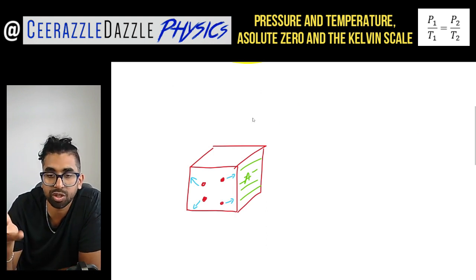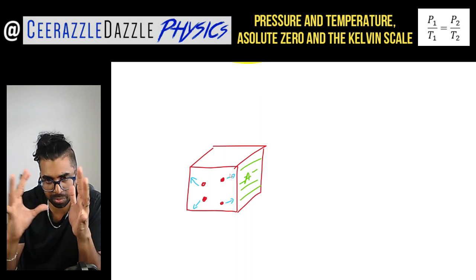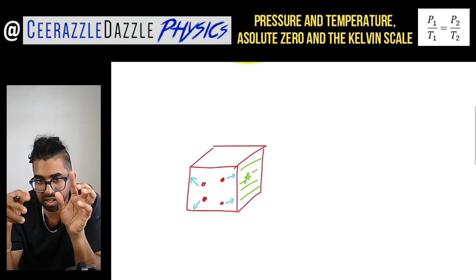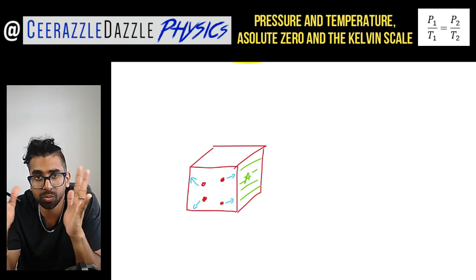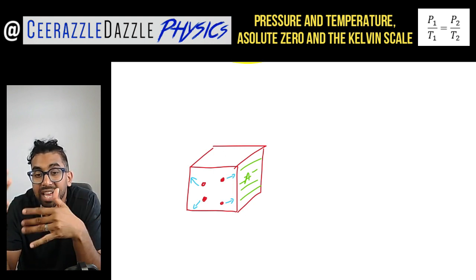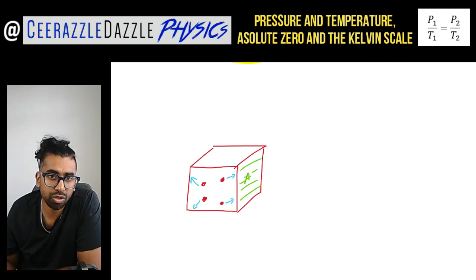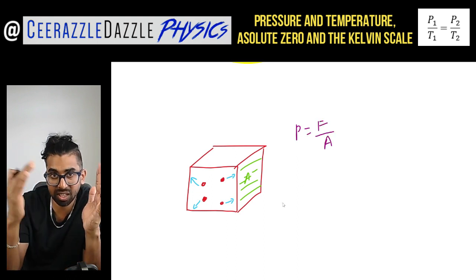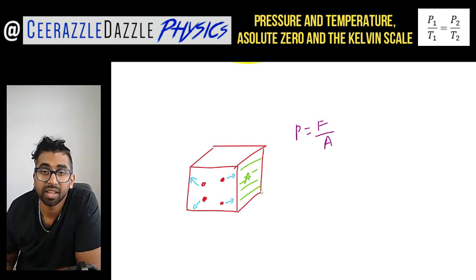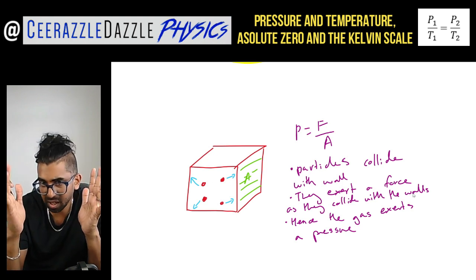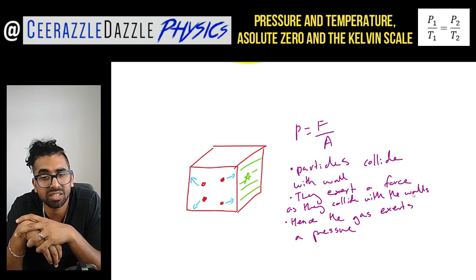Hopefully you have an idea about how gas pressure works. I've drawn a box of fixed volume and inside there is a gas. The particles are moving in random directions and colliding with the walls of the container. Every time they collide with the walls they exert a force acting upon an area, and since pressure equals force divided by area, the gas exerts a pressure on the container.